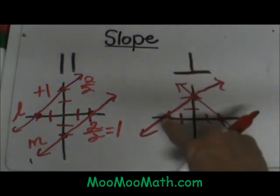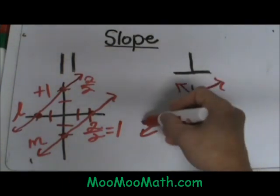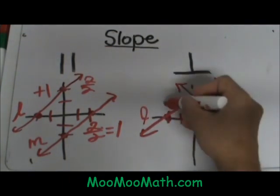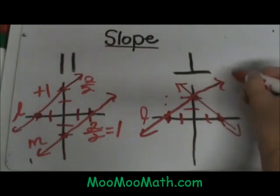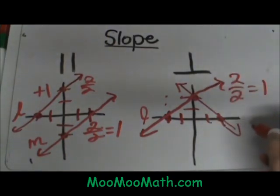Now let's look at the two lines over here. We have the same first line. Line L has a slope of up 2 over 2. The slope of line L is still 2 over 2 or 1.